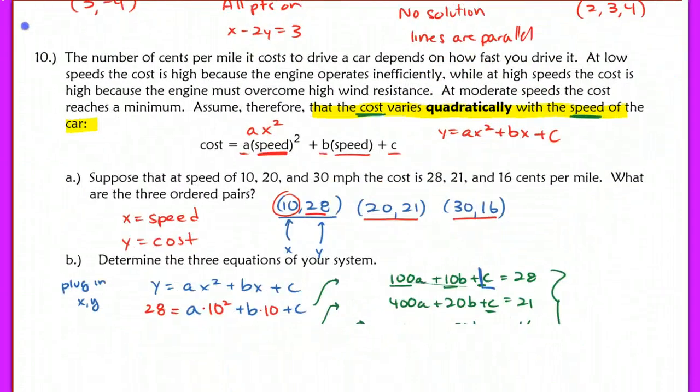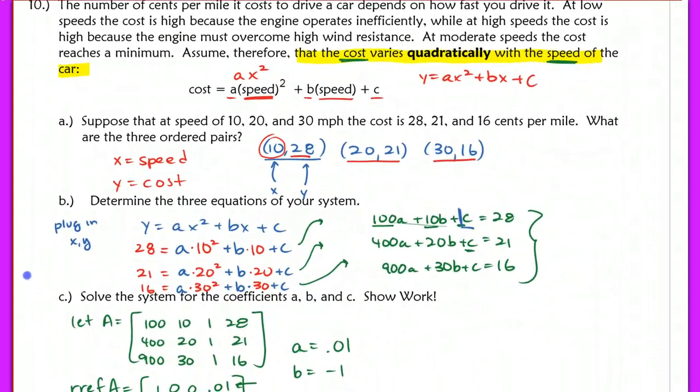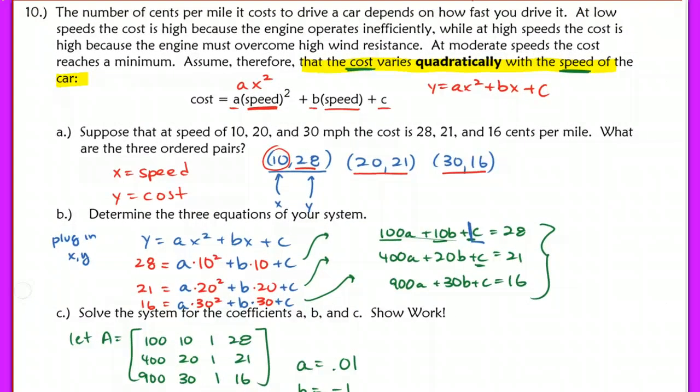Number 10, this is probably the most difficult question that we did so far because we're using this as an application of quadratic models. First we had to determine what the actual equations were. We did that by plugging in the points that we were given at first. So we had points 10, 28, 20, 21, and 30, 16. After we defined our variables and after we came up with our ordered pairs, we used the quadratic model that they gave us.